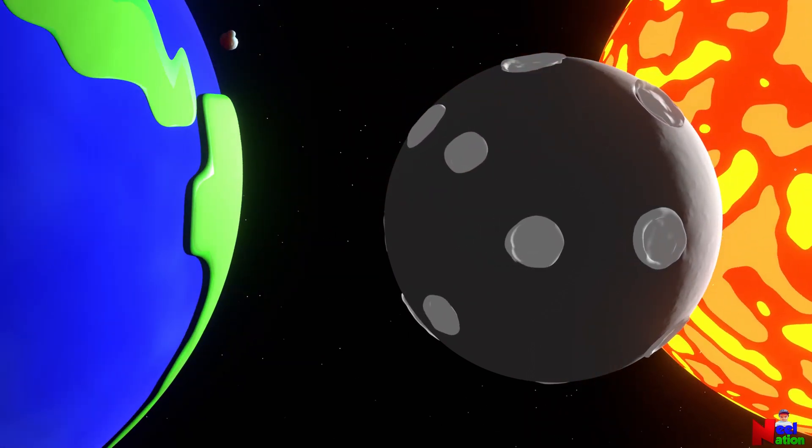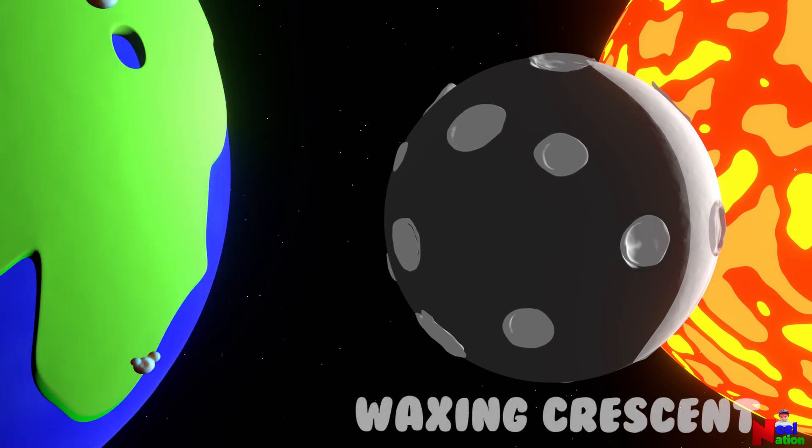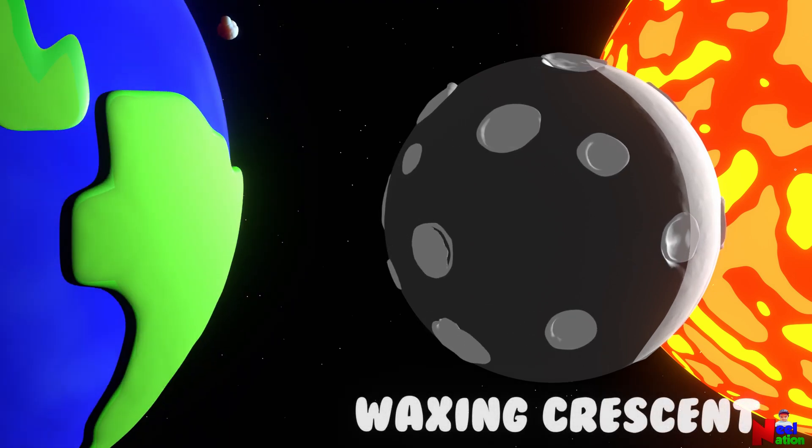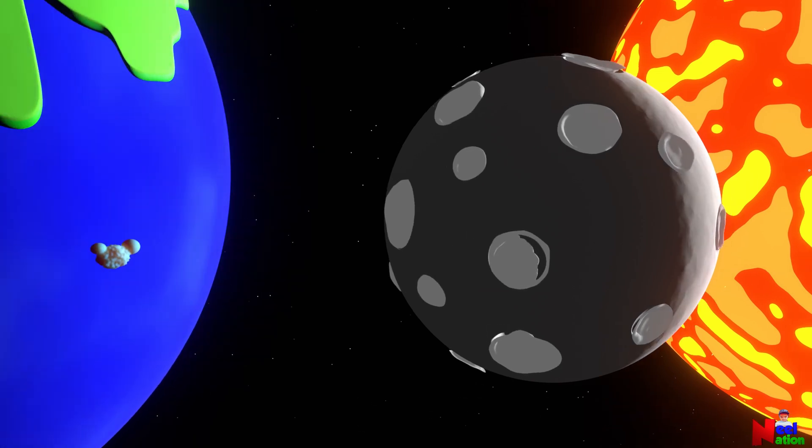In the next phase, only a tiny portion is visible to us from Earth. This is called a waxing crescent. Waxing means that the lit up side is increasing.